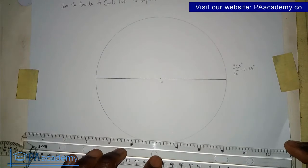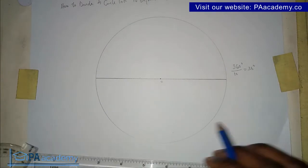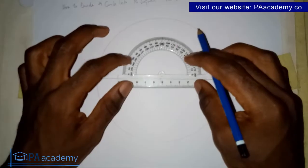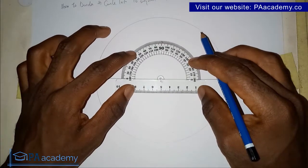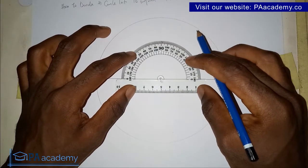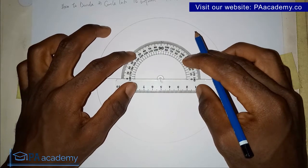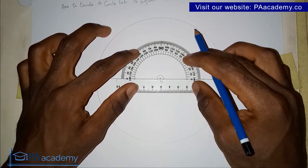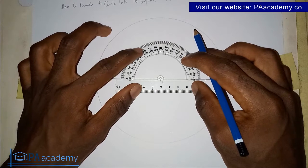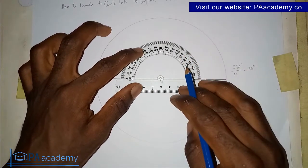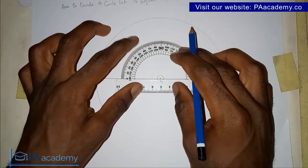Now we have it in two equal halves. Then we bring in our protractor. You place the protractor at the center, which is point O. The next thing we're going to do is to mark 36-degree intervals.